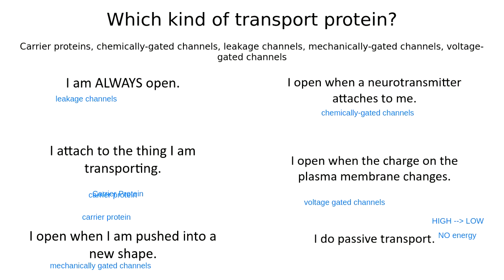Which of these kinds of proteins do facilitated diffusion? Passive transport is basically asking who does facilitated diffusion?